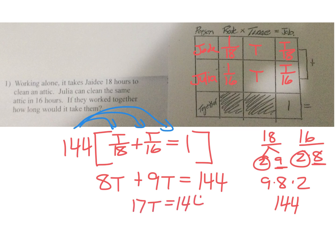Divide 144 by 17. If they work together, how long would it take them? In this particular case, we get approximately 8.47 hours.